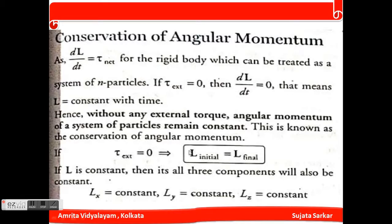When τ_external equals zero, angular momentum is conserved, meaning L_initial equals L_final. L is constant for all three components: Lx, Ly, and Lz remain constant along the three coordinate axes.